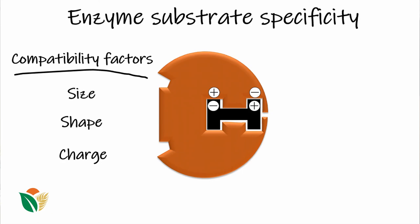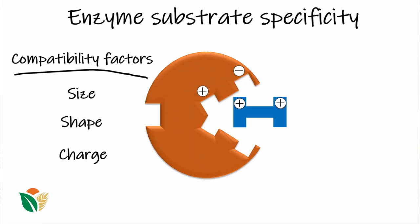The charge of the amino acid residues and their side chains within the catalytic site will also influence the binding potential of a substrate. Some molecules which look like the same substrate but don't have matching charges will actually be incompatible for the catalytic reaction, and so catalysis won't occur. This is how we build up an enzyme's substrate specificity.